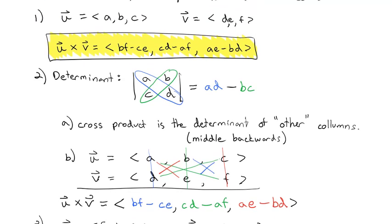That's the cross product. You can either memorize the formula or remember the determinant pattern — the center component uses opposite order, but the other two follow the standard determinant pattern. We'll practice these in class and on homework, and we'll answer your questions when we see you.